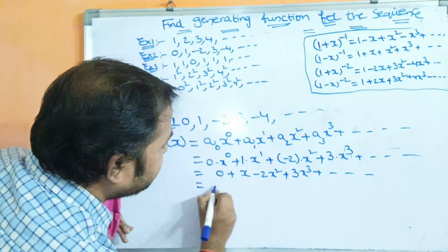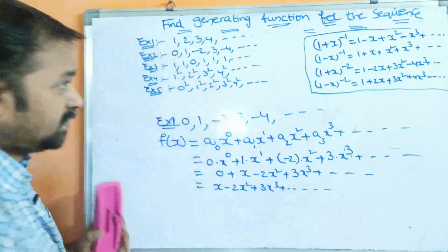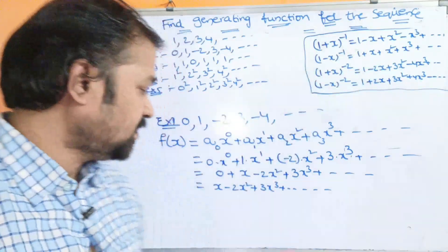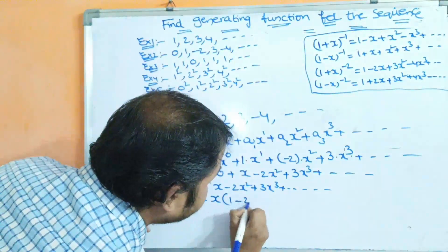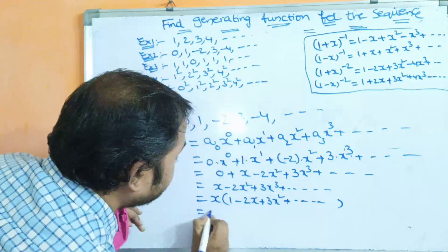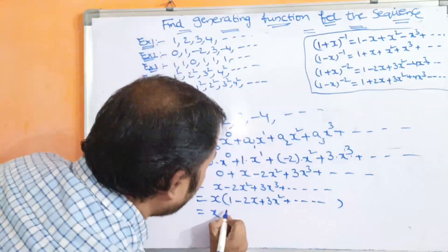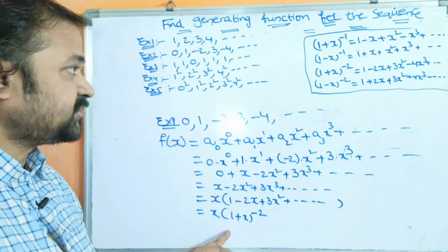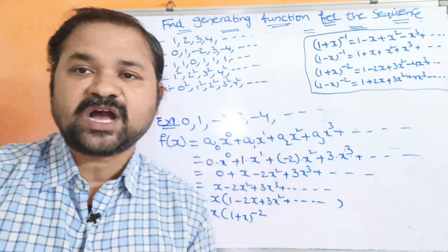So f(x) = x - 2x² + 3x³ - ... We can factor out x: x(1 - 2x + 3x² - ...). This expression inside the brackets is the formula for (1+x)^(-2). Therefore the generating function is x·(1+x)^(-2).